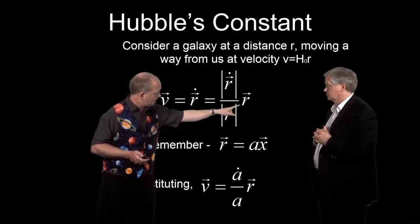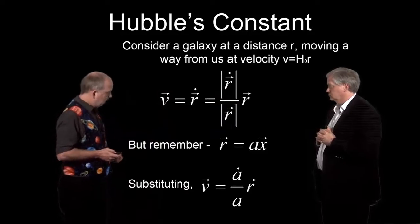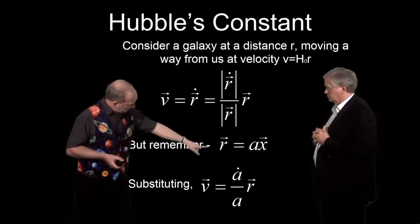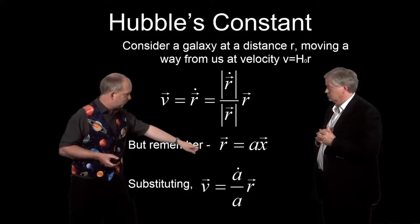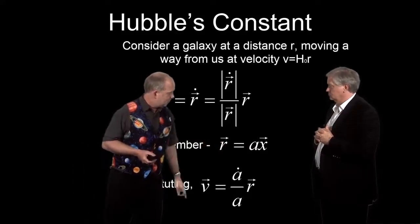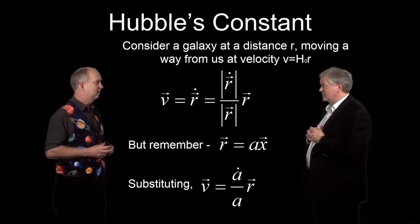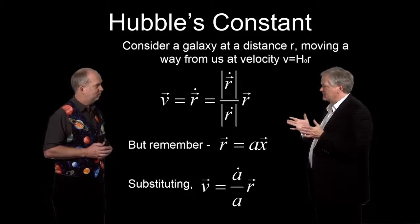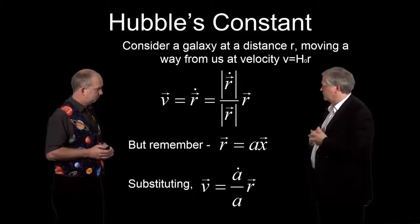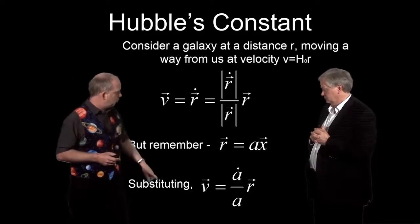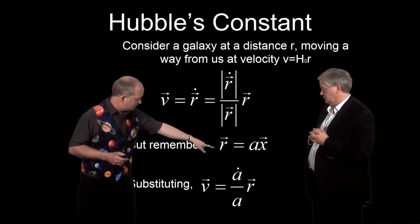But if we remember from the Robertson-Walker metric that r, the distance to something, is just a times its coordinates, where a is not acceleration here, it's the scale factor, it's the thing that tells you how big the universe is. So we can then substitute in, if we differentiate this.